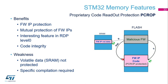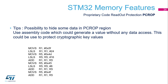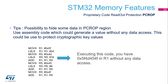The weaknesses of this mechanism are volatile data that are not protected, and the requirement for specific compilation which is not always easy. As a tip: you can hide data inside the PCROP region using assembly code, because with assembler you can generate values directly in registers without any data access. For example, executing such code will load the value 0x5F4D454F into register R1 without a data access. For security purposes, imagine storing a specific key value encoded in assembly inside the PCROP region — it can only be executed, and the value then appears in the registers.